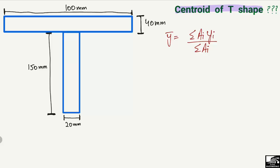In this case we have two objects: object one and object two. We need to find the area of each object and also the centroid of each of these two objects. By putting the values into the formula, we will find out the centroid of the T-shape.